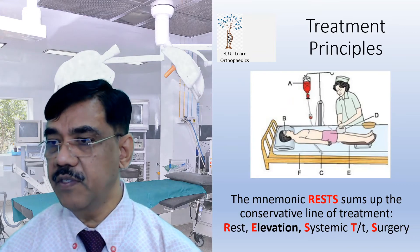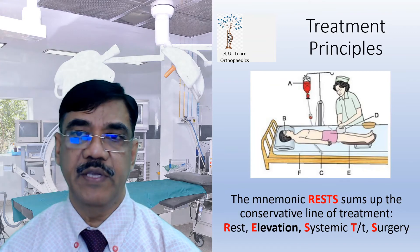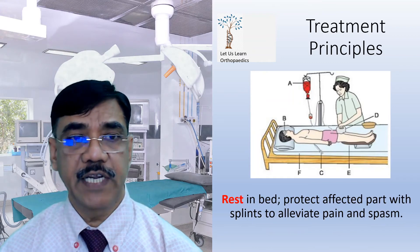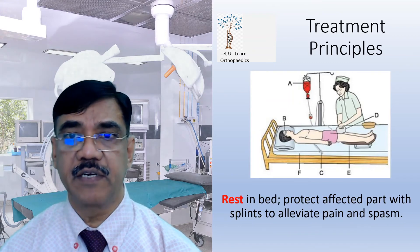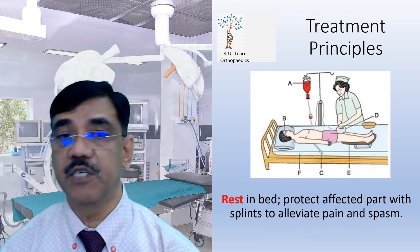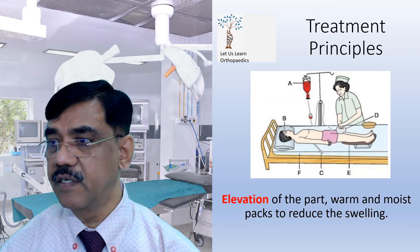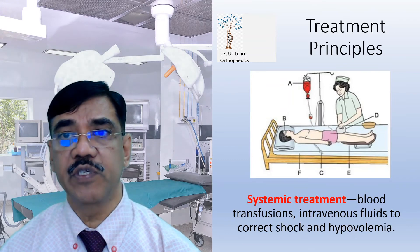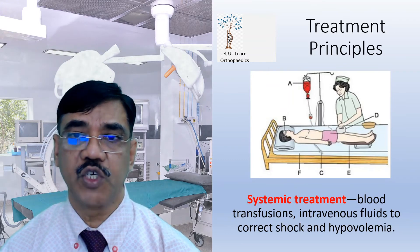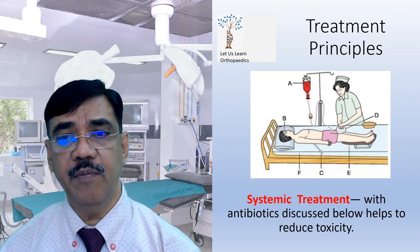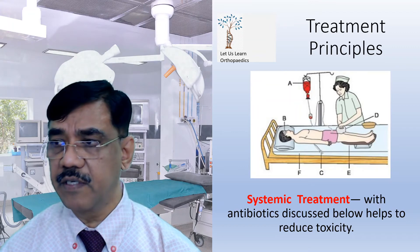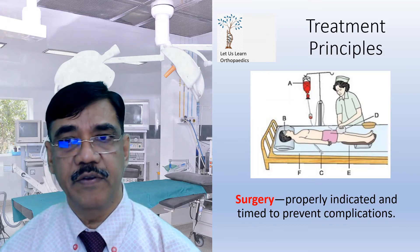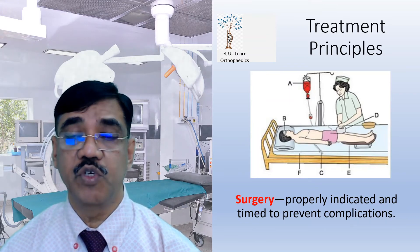RESTS means: R for rest, E for elevation, S for systemic, T for treatment, and S for surgery. Rest in bed protects the affected part with splinting to alleviate pain and spasm. Elevation of the part with warm and moist bags helps reduce swelling. Systemic treatment includes blood transfusions and intravenous fluids to correct shock and hypovolemia, along with antibiotics to help reduce toxicity. Surgery, when properly indicated and timed, helps prevent complications.